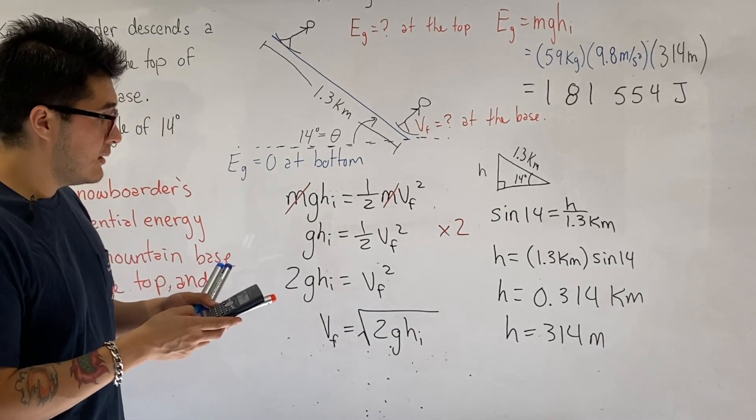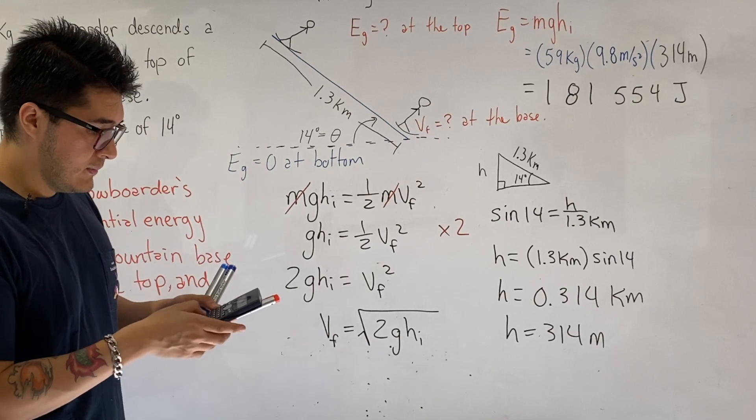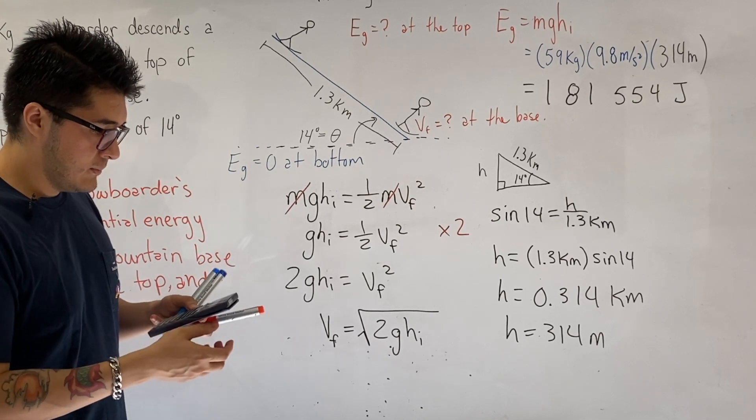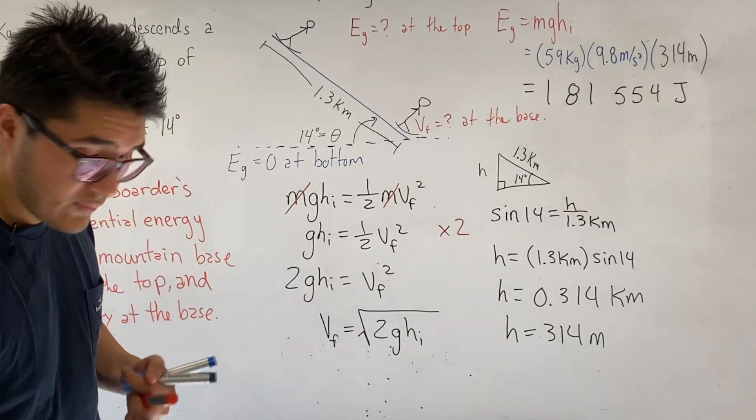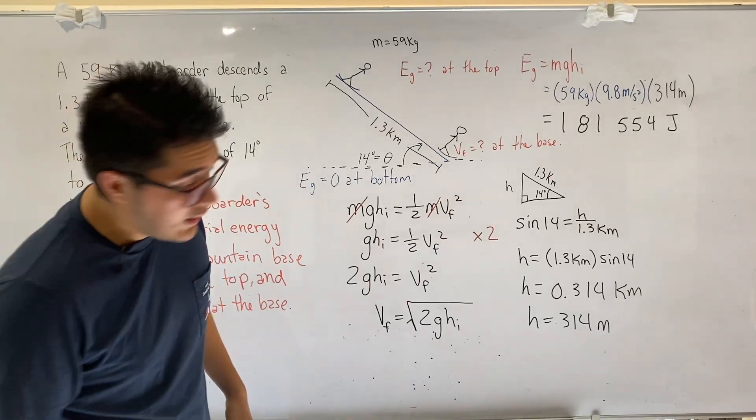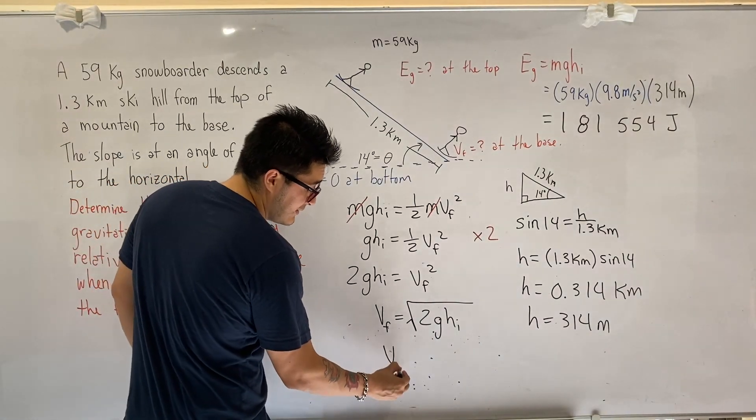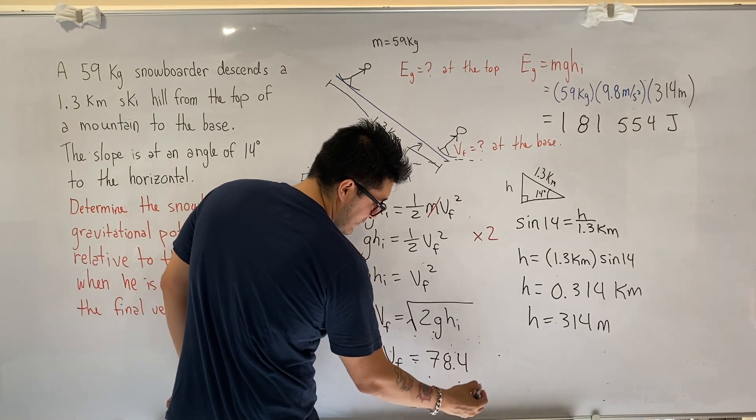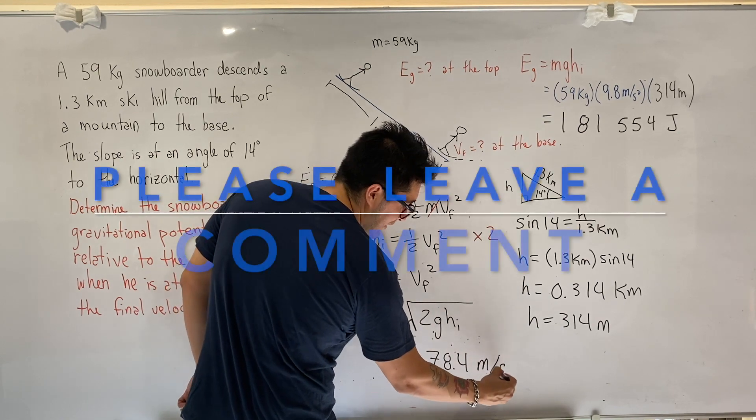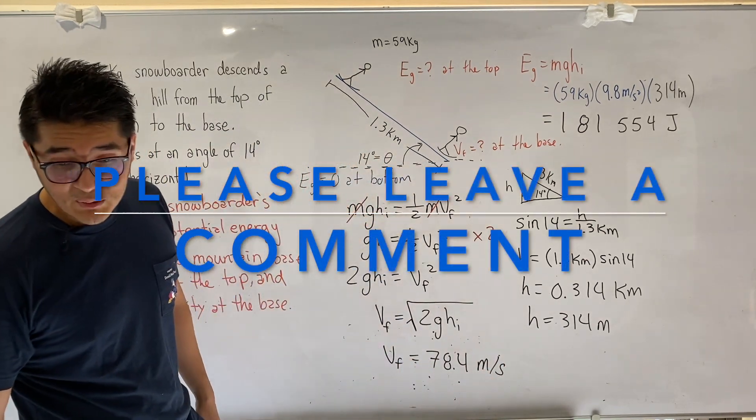So let's put this into the calculator. 2 times 9.8 times 314. Let's take root. 78.4. Wow, I think that is quite fast. I think maybe good luck staying alive. I'm not so sure that this was a correct number, so please leave a comment if it's not correct. It seems quite high.